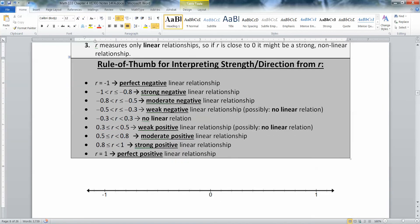So then we have right here the rule of thumb for interpreting strength and direction from R. If R equals negative 1, that's a perfect negative linear relationship. Positive 1 is a perfect positive. Then between negative 1 and 0.8 is a strong relationship. Between 0.8 and 0.5 is moderate. Between 0.5 and 0.3 is weak. And from negative 0.3 to positive 0.3 is basically no linear relationship whatsoever. The same numbers happen on the other side. I'm going to draw this up for you and shade it in.